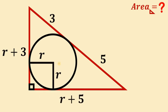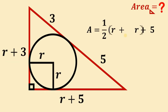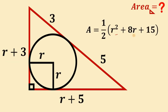Now we can find the area of this triangle. The area of this triangle equals one-half times base times height. The base is R plus 5 and the height is R plus 3. So the area equals one-half times (R plus 5) times (R plus 3). Simplifying, R plus 3 times R plus 5 gives us R squared plus 8R plus 15. So the area equals one-half multiplied by R squared plus 8R plus 15.